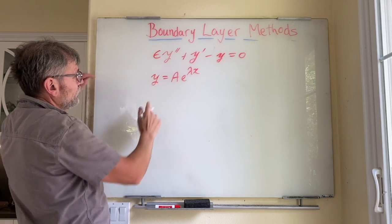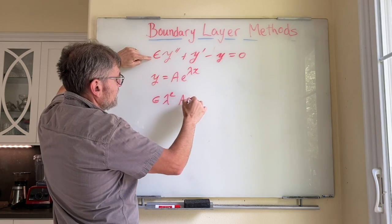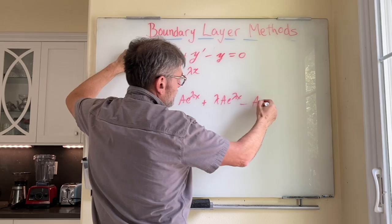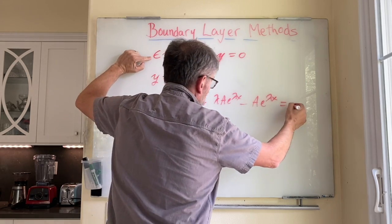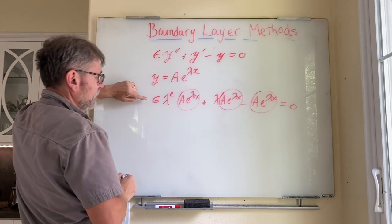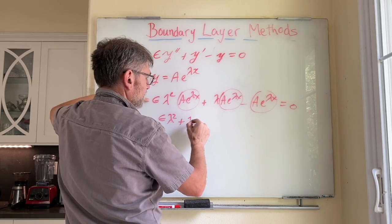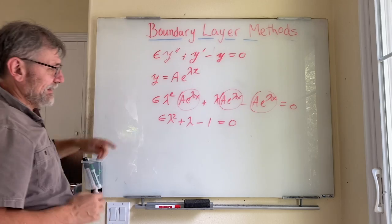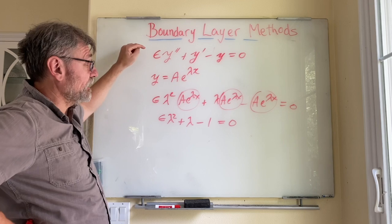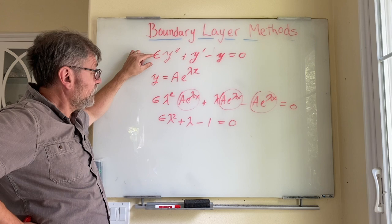We substitute that into the equation. What we get is epsilon lambda squared times ae to the lambda x, plus lambda ae to the lambda x, minus ae to the lambda x, equals zero. All these ae to the lambda x terms cancel, and what we're left with is epsilon lambda squared plus lambda minus one equals zero. We get back this quadratic equation that we just finished analyzing using the perturbation expansions — the regular and singular perturbation expansions.